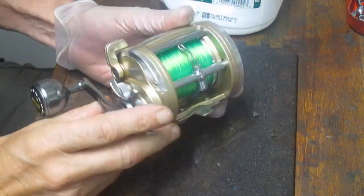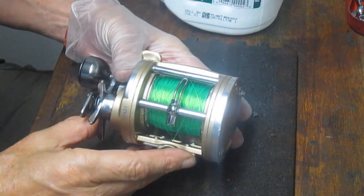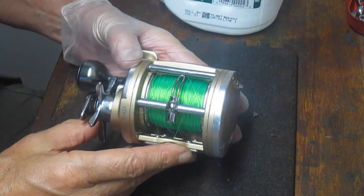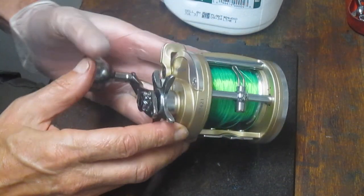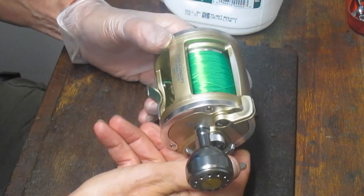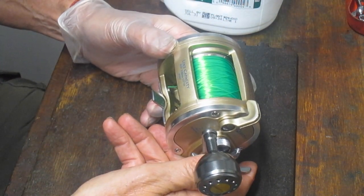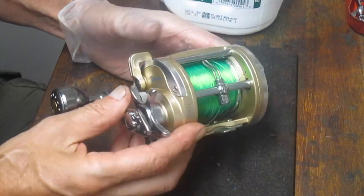They're two ball bearing reels along the lines of a Penn 320. It's a lightweight frame, high-speed reel with a 4.2 to 1 ratio and a capacity of 220 yards of 30 pound line.